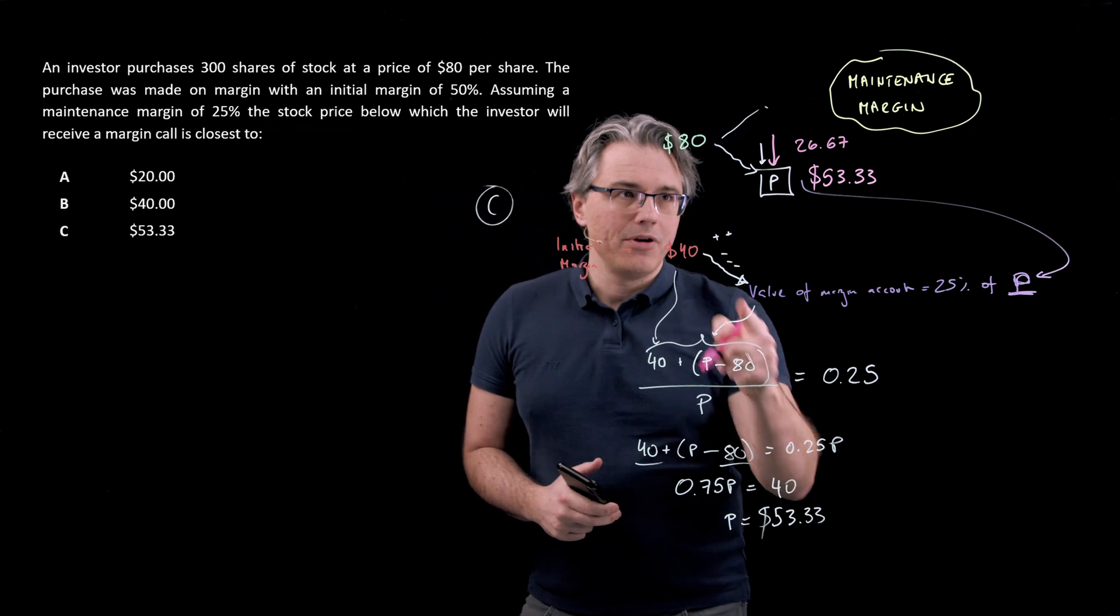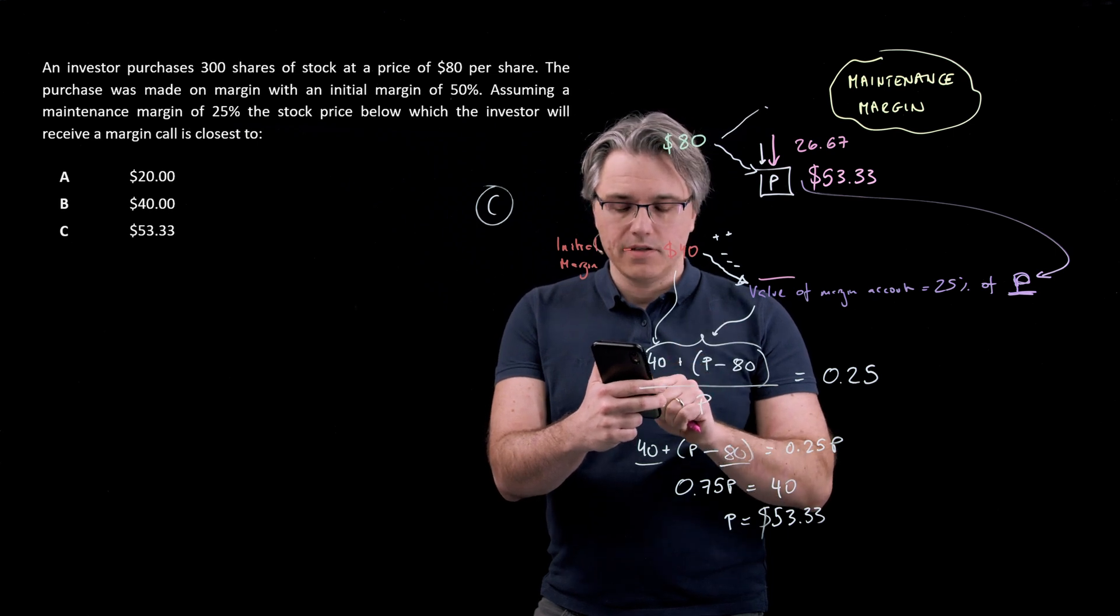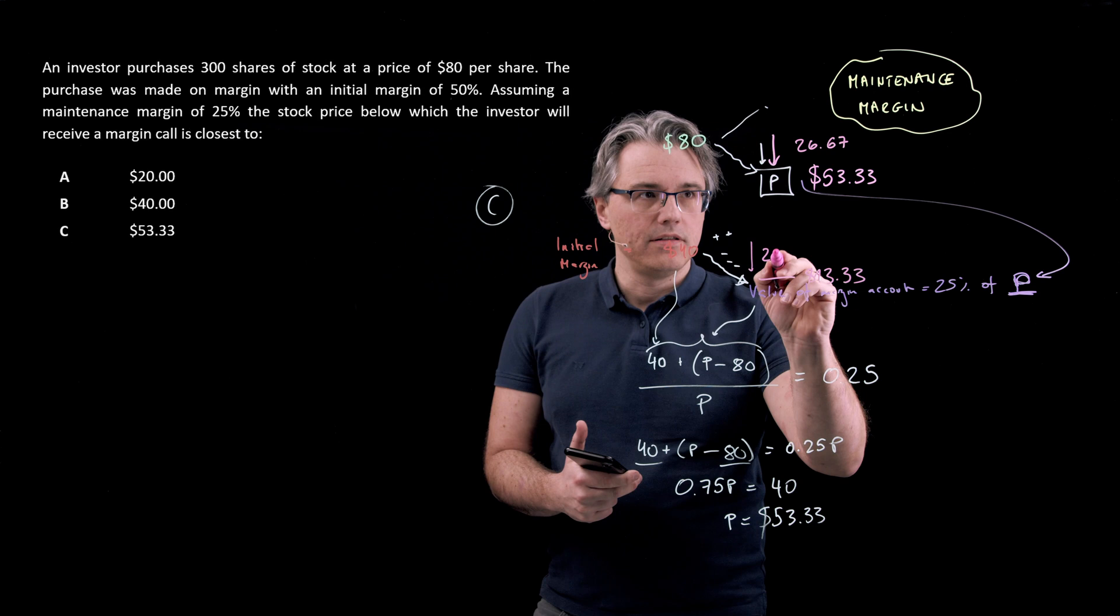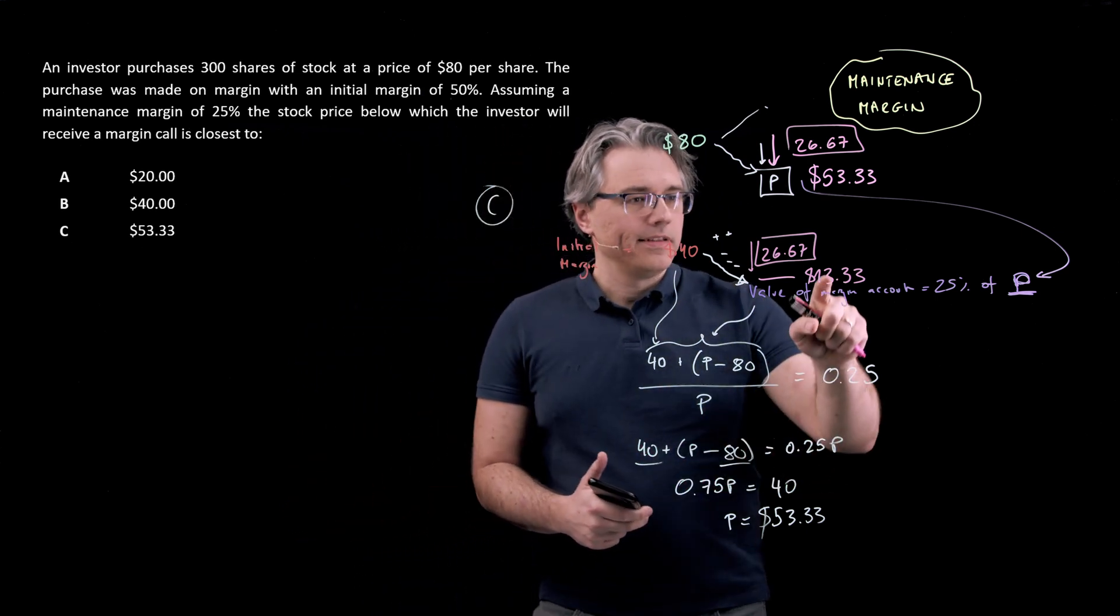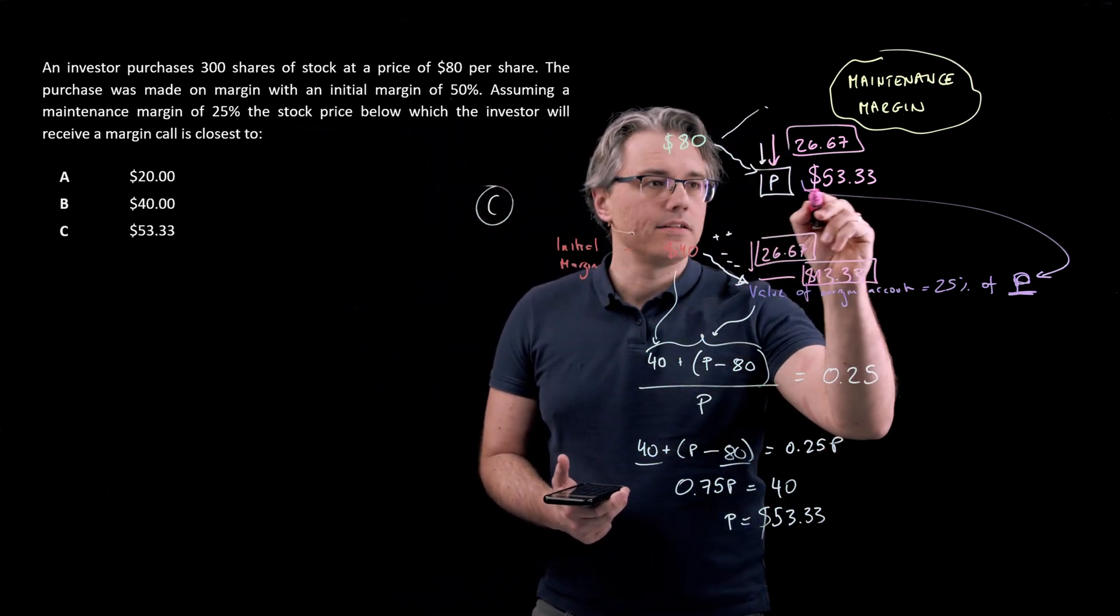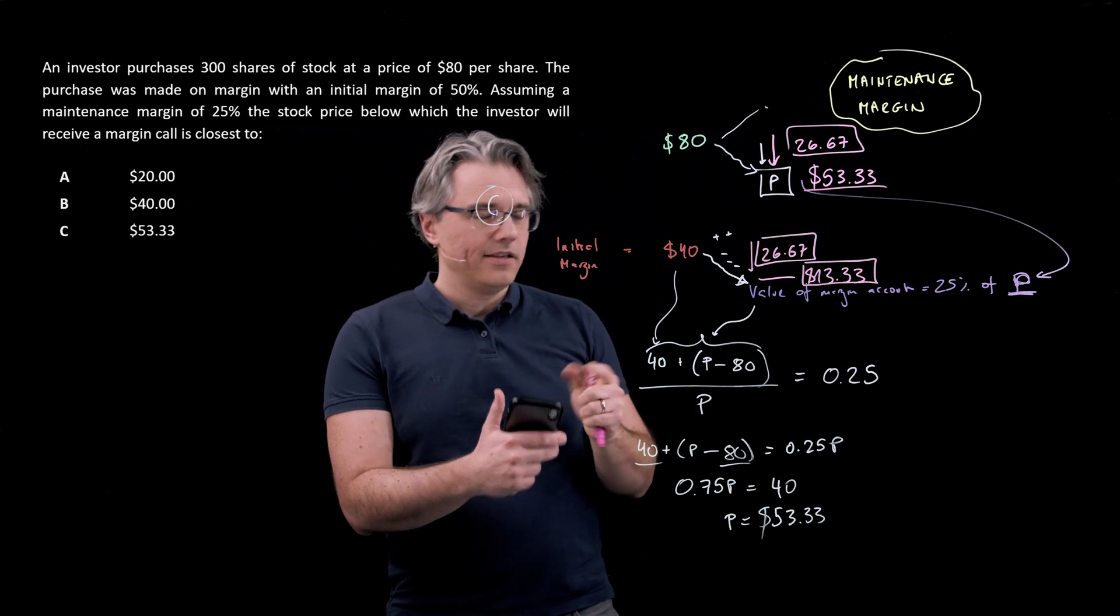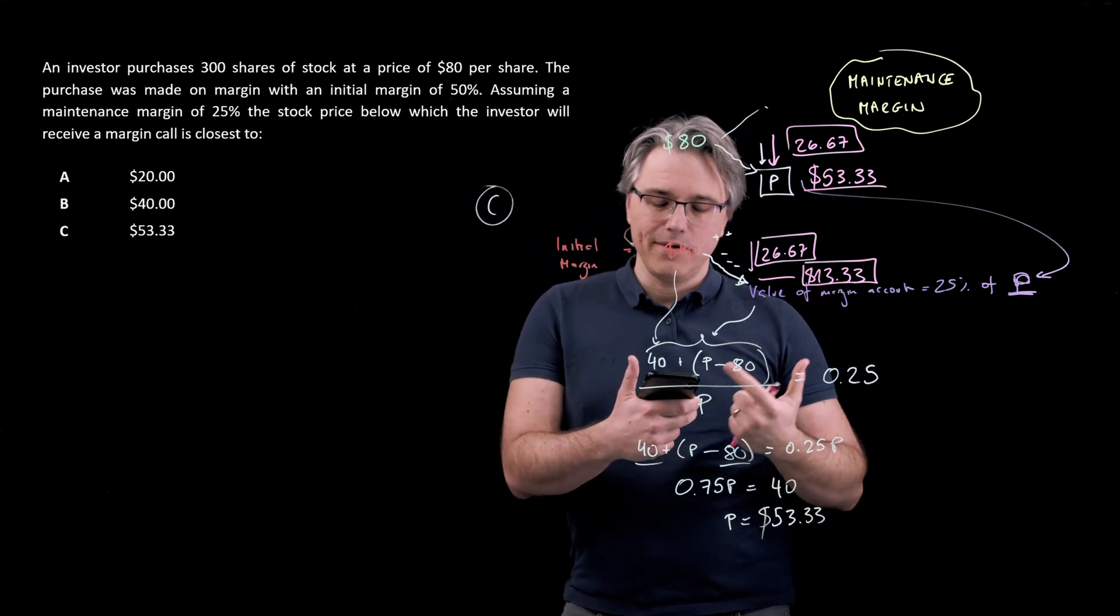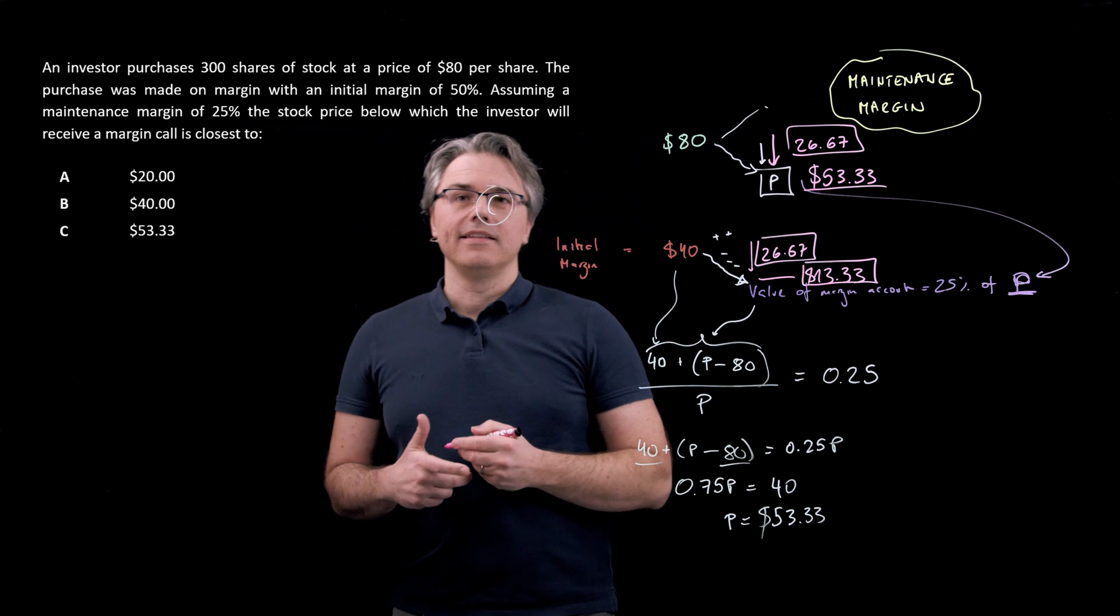Now, from the point of view of our margin account, doing 40 minus 26.67 would give us a level of 13.33 in our margin account, if we suffer this deduction. That's the same drop as up here. And now, take 13.33, the value of the margin account once that drop has been suffered, and relate it to the current share price. 13.33 divided by 53.33 equals almost exactly 25%. This is due to me rounding to 3.33. I can see an answer of 24.99%. So, this is indeed the price level which satisfies this equation or this relationship.